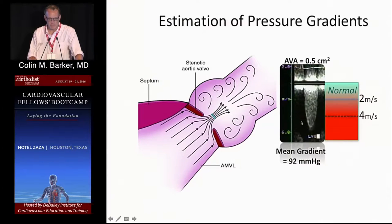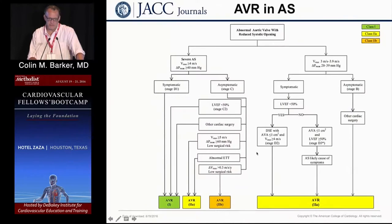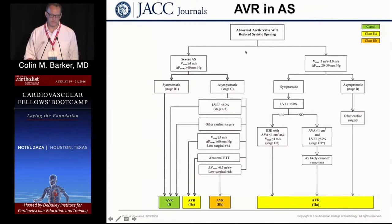In the echo lab, we measure a pressure drop across the aortic valve with a corresponding increase in velocity. A normal velocity across the aortic valve is 2 meters per second; severe aortic stenosis is 4 meters per second. As an example, one patient here has a velocity of almost 5.5 meters per second with a mean gradient of 92 mmHg.